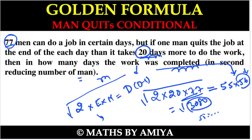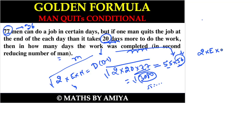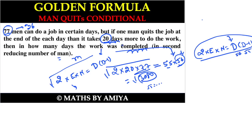The second case gives 56 days, and since there are 20 more days in this case compared to the first, the first case is 56 − 20 = 36 days. To recap: 2 × 20 × 77 = 3080. Write this as a product of two consecutive numbers — d × (d−1). Take the square root, which gives ≈ 55 point something, so d = 56 for the reducing case, and the original days = 36.